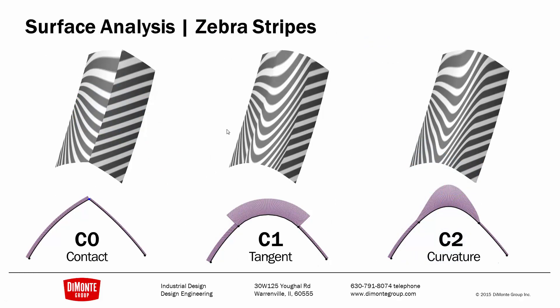When we do create our surfaces, we need to use the analysis tools to make sure we have clean connections between the various patches in the model. This is the same principle we talked about with splines. If the two edges are not tangent to each other, we have a C0 contact. If they are tangent, the radiuses are not equal, but the angle of the curves is equal at the junction. We can see this break in the highlights of the part.